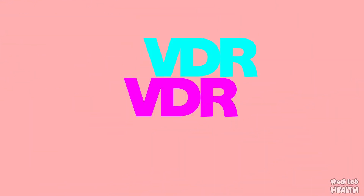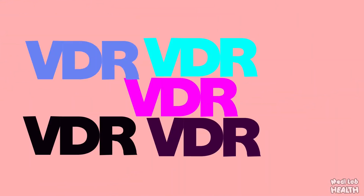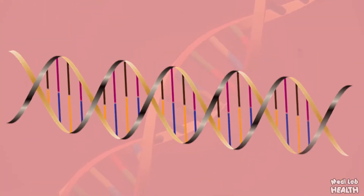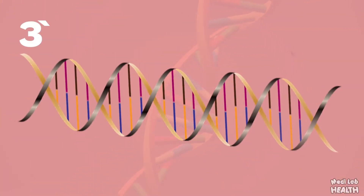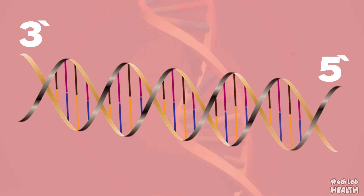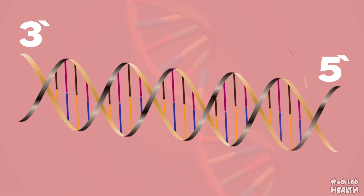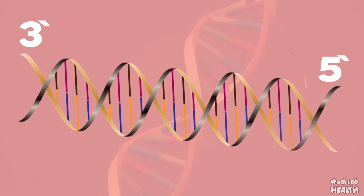The gene encoding VDR is known to contain a number of variations known as polymorphisms. Polymorphisms in both the 3' and 5' regions of the gene have been identified, and they are variously associated with risk of certain diseases including breast and prostatic carcinoma.